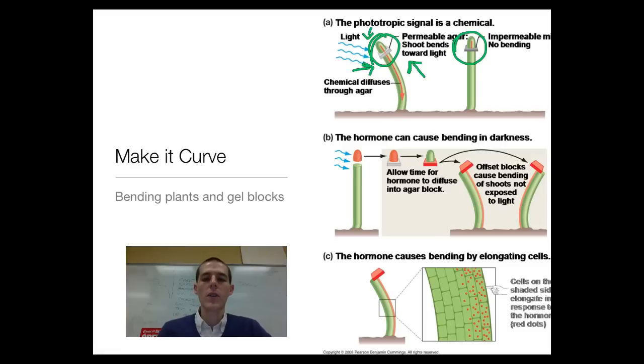The next set of experiments tried to figure out what the chemical is and how it worked. This time around, they took the tip and cut it off of the grass. They exposed that tip to light because they knew that whatever chemical they were dealing with was coming from the tip. They then took that tip and set it on some agar and let the hormones diffuse from the tip into the agar. They then took that agar, leaving the tip off of the grass, and put that agar block on top of the stem.